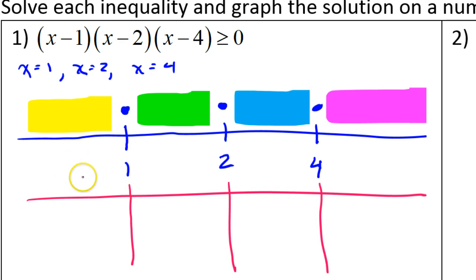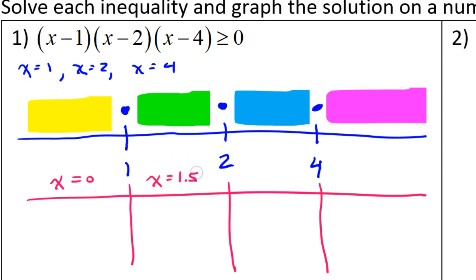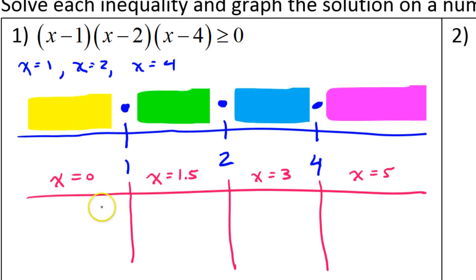What we need to do is check a test value in each interval and find out if it makes a true statement or not, because true statements are solutions. Pick an x value in the yellow zone — zero. I always use zero when I can. What about the green zone? We'll have to do a decimal, so 1.5. What about the blue zone? x equals 3. What about the pink zone? You can use 5, 10, 100, whatever you want.